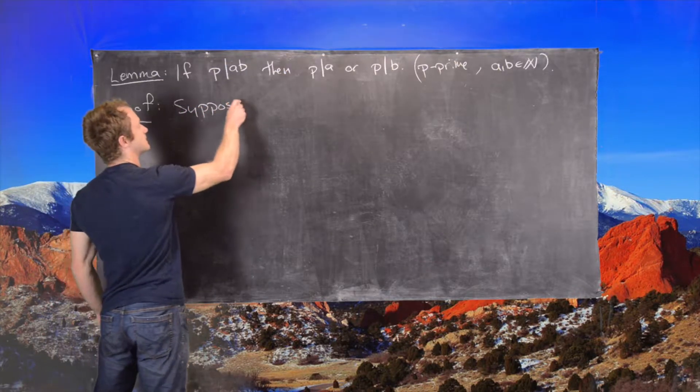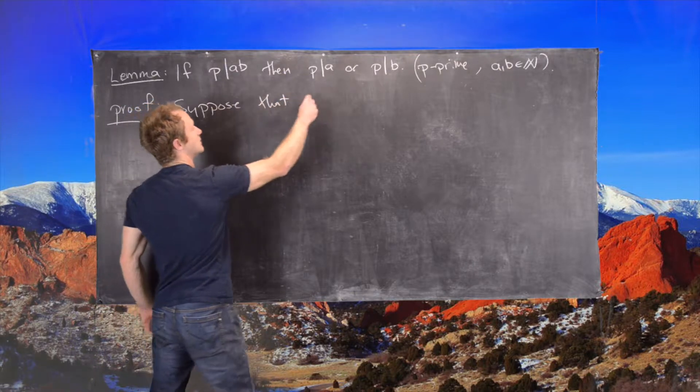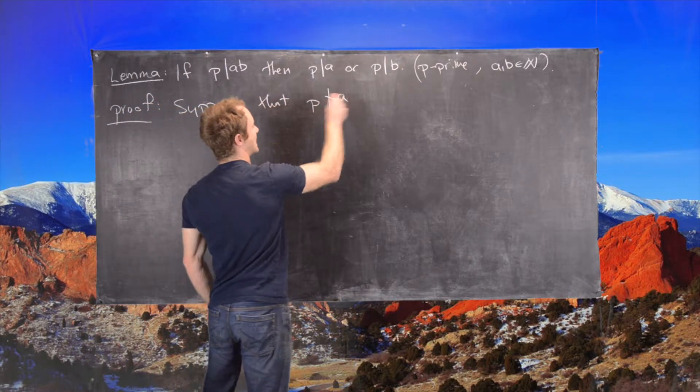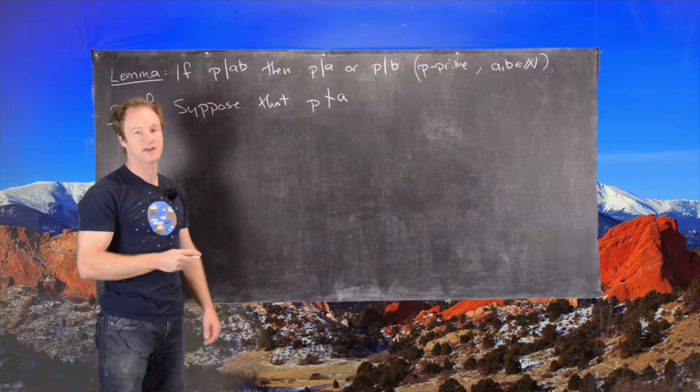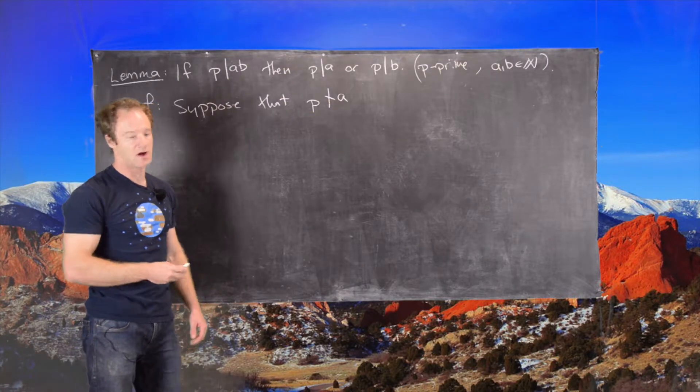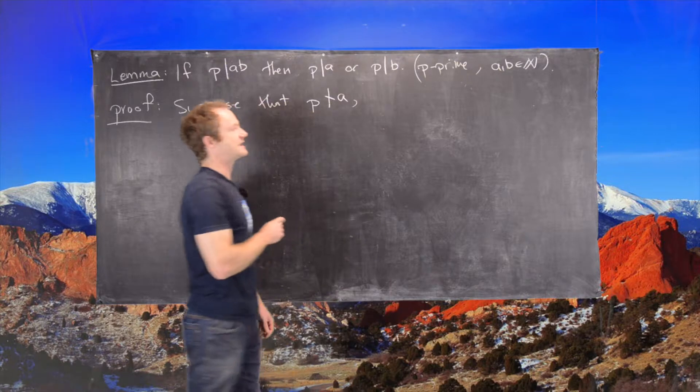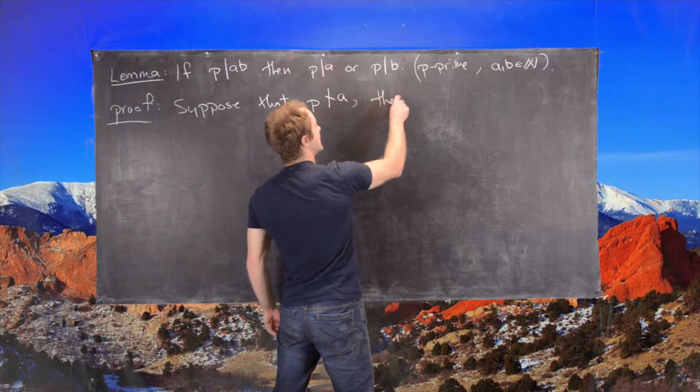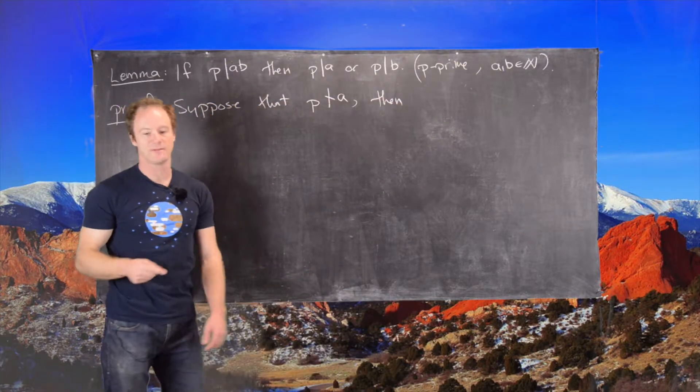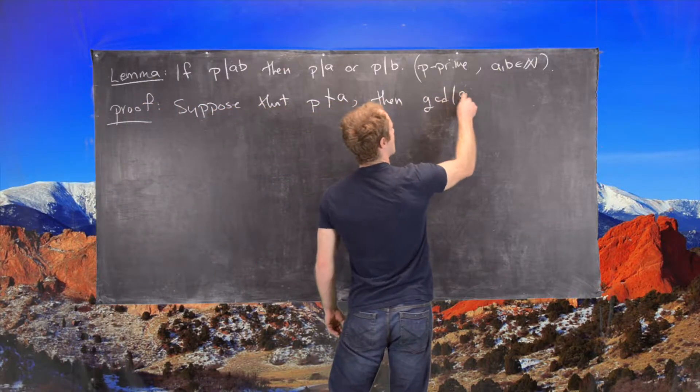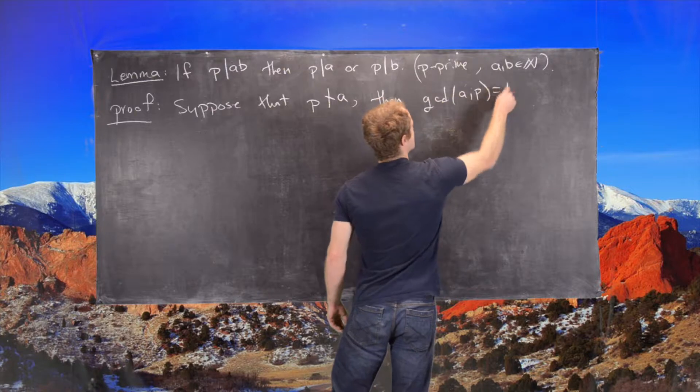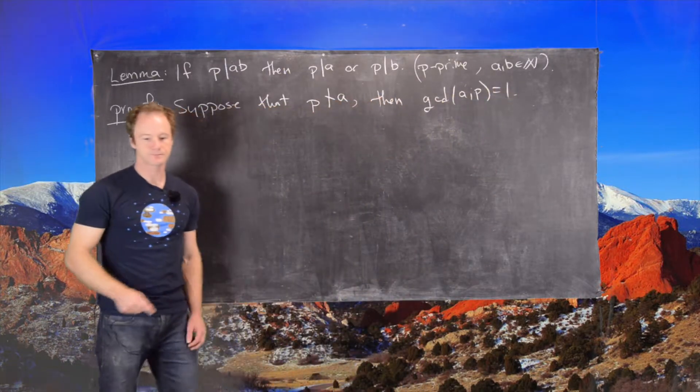Let's suppose that P does not divide A. And so, what we're going to end up with is that P does divide B. If P does not divide A, then since P is a prime number, we know the GCD of A and P is equal to one.